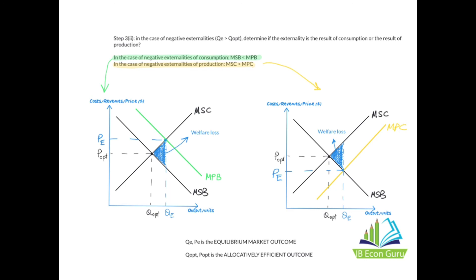My strategy for drawing the four externalities diagrams: always start with the intersection of MSC and MSB — that is the allocatively efficient outcome. Then decide: is this positive or negative externalities? With positive externalities, Q e will always be less than Q opt; with negative externalities, Q e will always be greater than Q opt. Then ask yourself: is it an externality of consumption or of production? I hope you found this video useful — please like, subscribe, share, and leave comments if you have any questions.